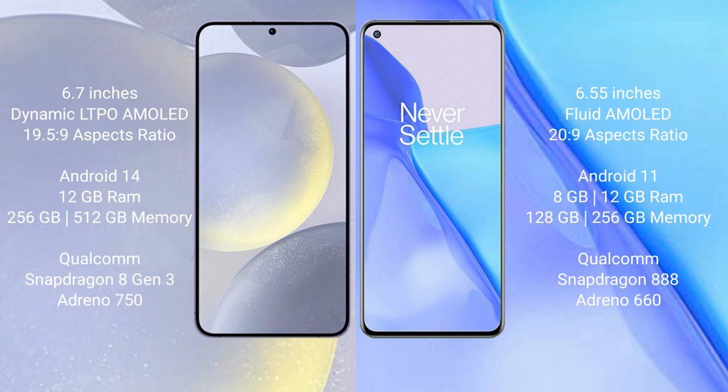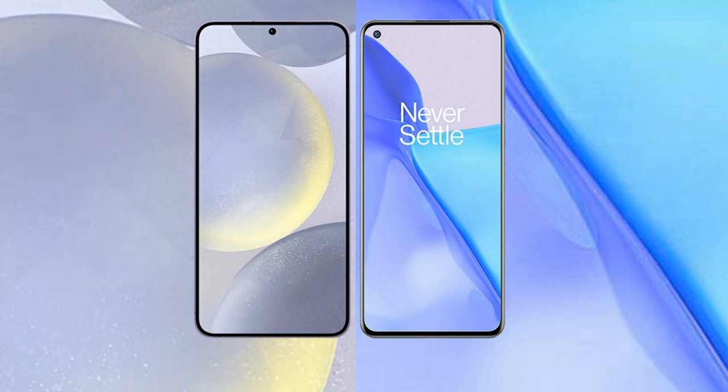Samsung Galaxy S24 Plus comes with 12GB RAM and 256GB internal storage, a Qualcomm Snapdragon 8 Gen 3 processor, and GPU Xclipse 950. OnePlus 9 comes with 8GB or 12GB RAM and 128GB or 256GB internal storage, a Qualcomm Snapdragon 888 processor, and GPU Adreno 660.